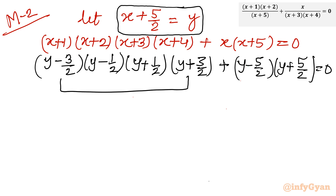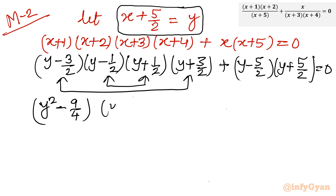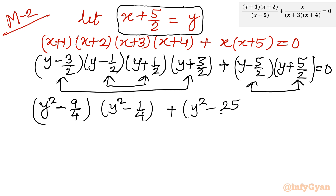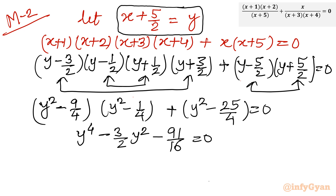From the first and fourth brackets we can apply the difference of two squares: (y minus 3/2)(y plus 3/2) gives y² minus 9/4. From the second and third brackets: (y minus 1/2)(y plus 1/2) gives y² minus 1/4. From the last two terms: (y minus 5/2)(y plus 5/2) gives y² minus 25/4, all equal to 0. Simplifying this product gives: y⁴ minus (3/2)y² minus 91/16 equal to 0, or multiplying through by 16: 16y⁴ minus 24y² minus 91 equal to 0.